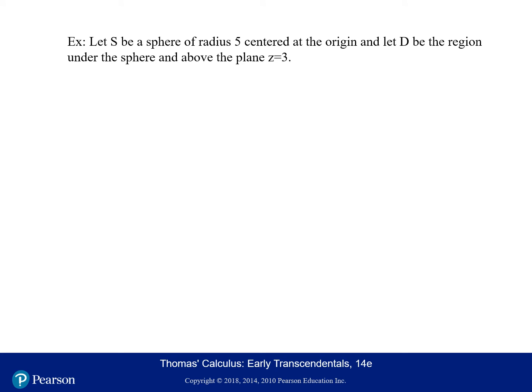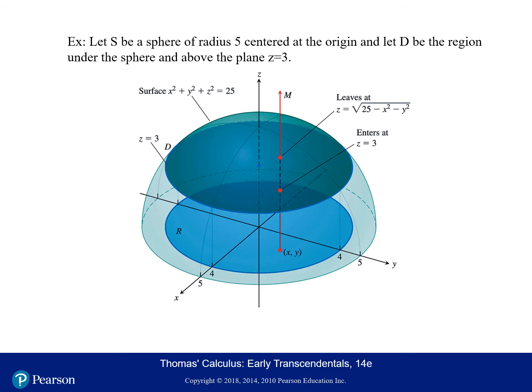Let's try this example. We're going to set up the triple integral. S is a sphere of radius 5, centered at the origin, and D is the region under the sphere but above the plane Z equals 3. Here's a visual of the region we're integrating over — the darker part is like a cap of the region. This is D: it's above the plane Z equals 3 and below the sphere.